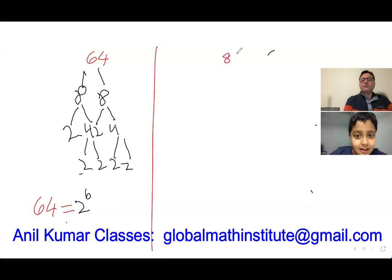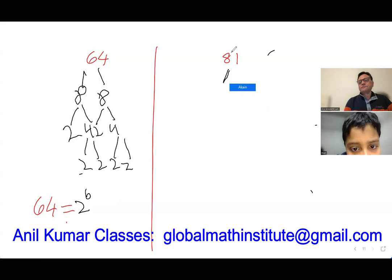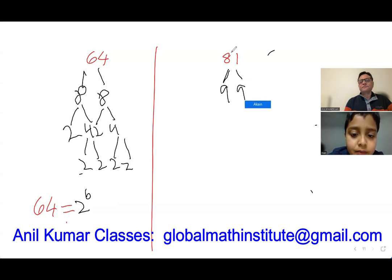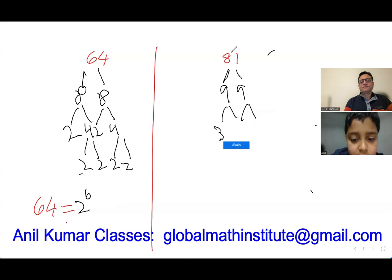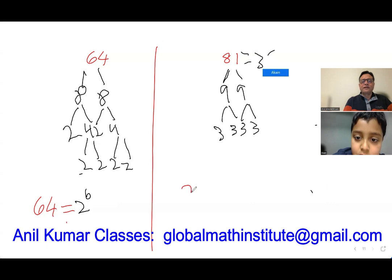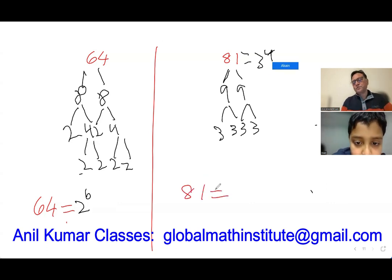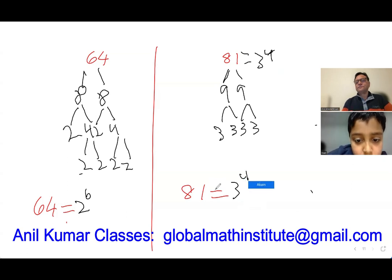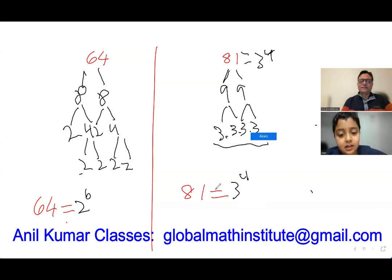How will you do prime factorization of 81? 9 times 9. And 9 is 3 times 3 each. So 81 equals 3 to the power of 4.